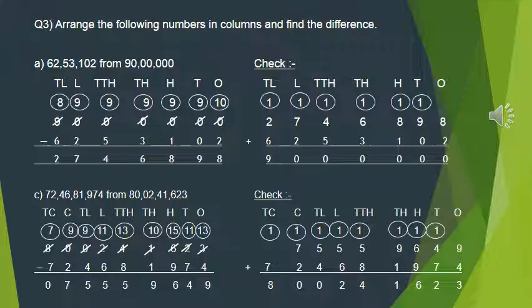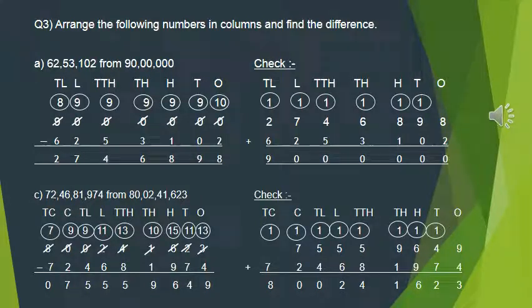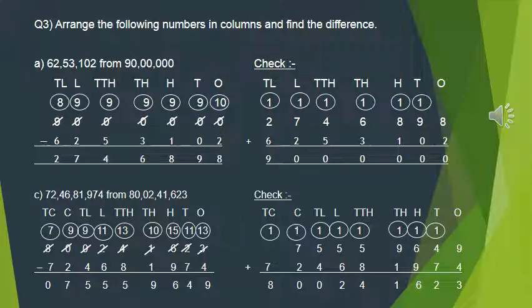We start subtracting from the ones place. 10 minus 2 is 8. We borrow, so 9 minus 0 is 9. Again we borrow, making 0 into 9; 9 minus 1 is 8. Again borrowing: 9 minus 3 is 6. Again borrowing: 9 minus 5 is 4. Again borrowing: 9 minus 2 is 7. After the final borrow, 8 minus 6 is 2. So the answer is 27,46,898.